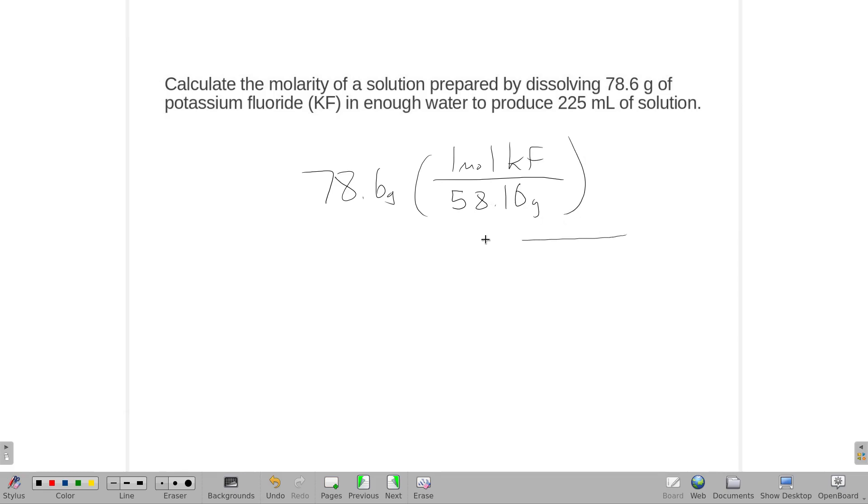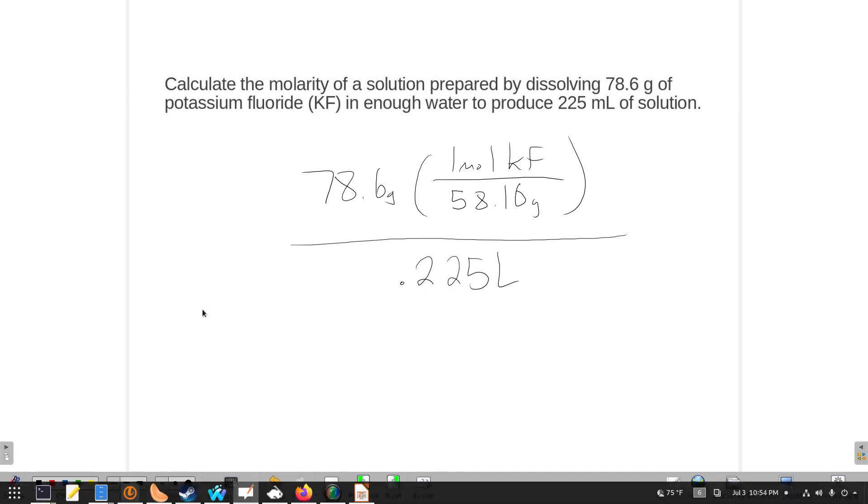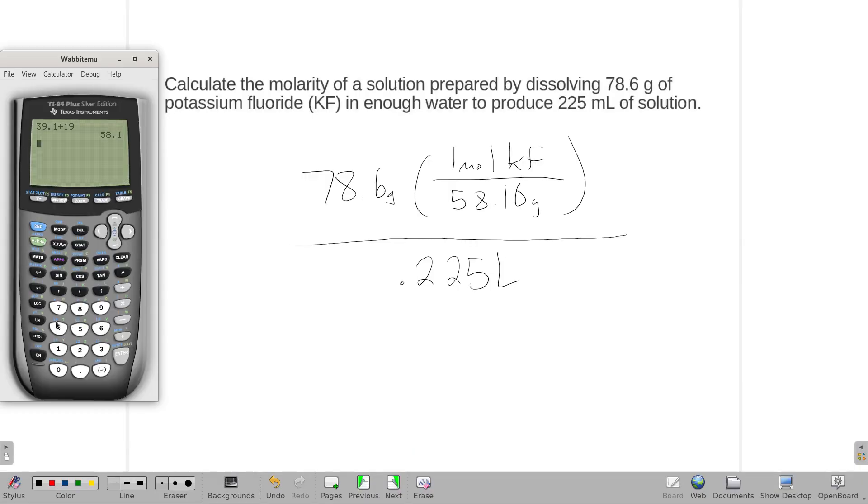and I want a molarity, so down here is just the volume we're turning it into. So I get 78.6 divided by 58.1, and then also divided by .225, gives us a molarity of 6.01.